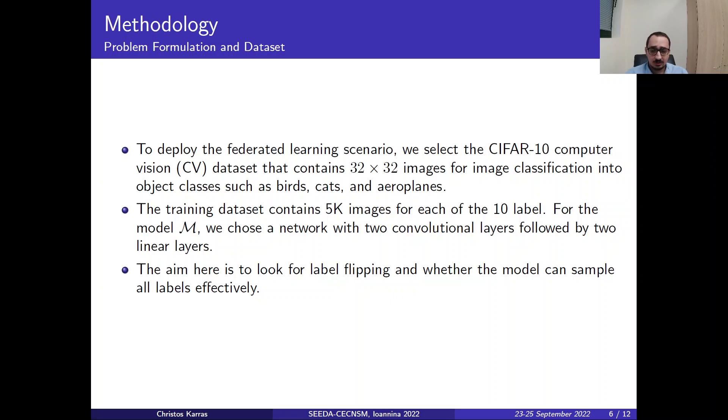The training dataset contains 5K images for each of the 10 labels in the dataset. So for the model M that we want to construct, we have a neural network with two convolutional layers followed by two linear layers. The aim here is to look for label flipping and whether the model can sample all 10 labels effectively.